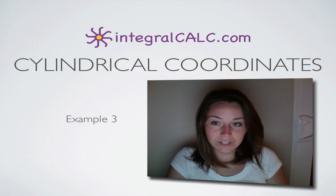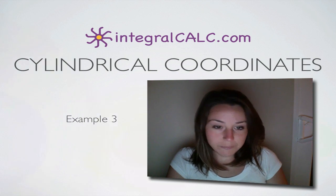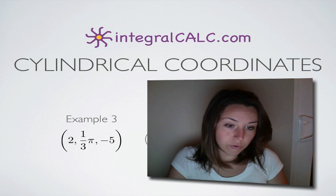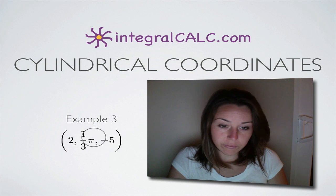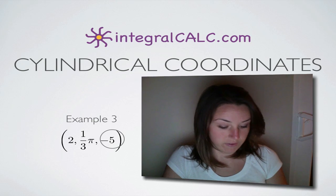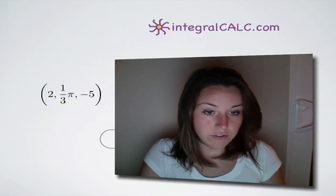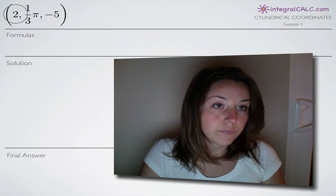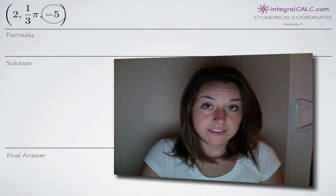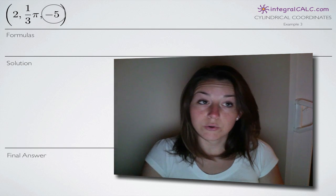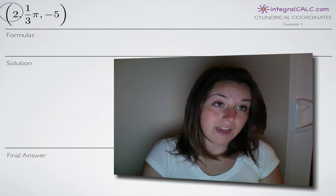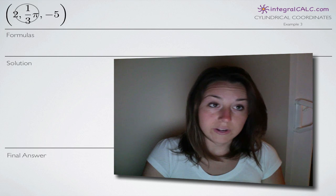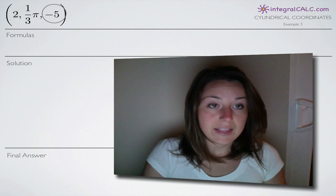Today we're going to be doing another cylindrical coordinates example. In this example, we're given the cylindrical coordinates 2, pi over 3, negative 5. Those are cylindrical coordinates in the form r, theta, and z, as opposed to rectangular coordinates where we always have x, y, and z. With cylindrical coordinates, we have r, theta, and z.